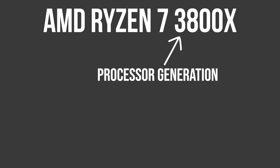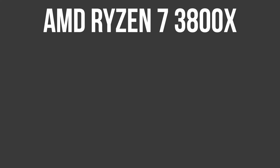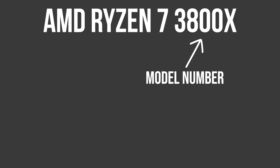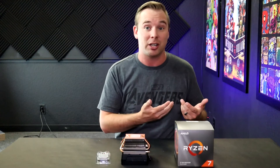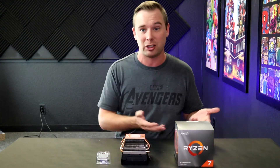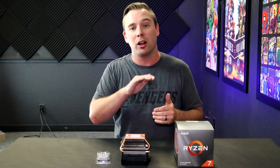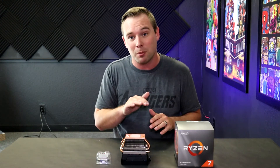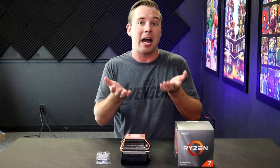The 3800X — the 3 that starts that number means it's a third-gen Ryzen CPU, which was the newest one at the filming of this video. The 800 is also a model number, so the larger that number, the better the CPU. There is a 3700X that has a lower clock speed and a lower boost clock with the same number of cores, but I wanted a higher clock speed, so I went with the 3800X.